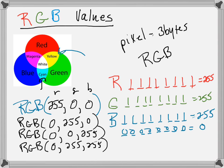So RGB values — I can put decimal numbers in there. But you can also specify a color with its hexadecimal code, which you may have noticed if you've done anything with HTML.